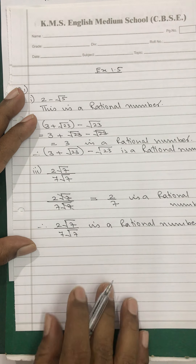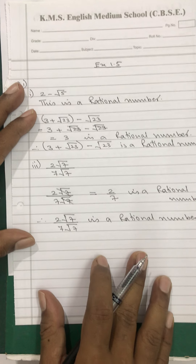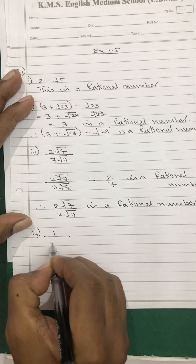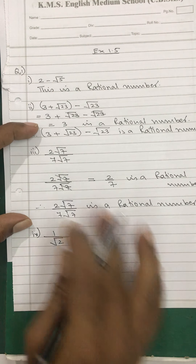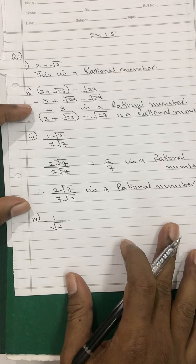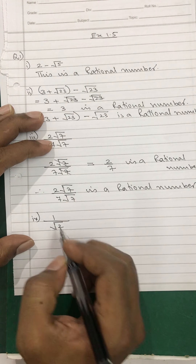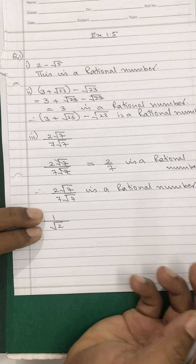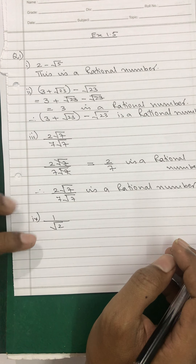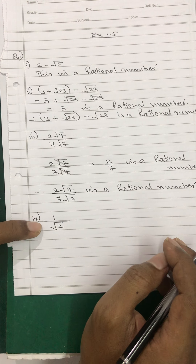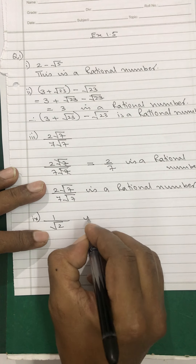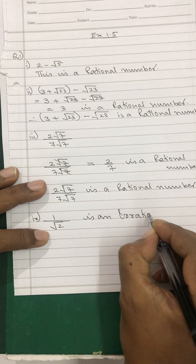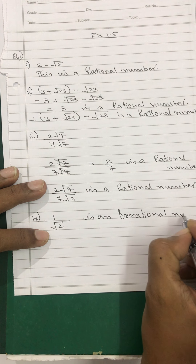This is the presentation criteria I am showing you — you can't just write that it is a rational number; that is not accepted. You have to bring it to the simplified form. In this simplified form, 1 is a rational number and the denominator root 2 is an irrational number. Therefore, this is an irrational number.